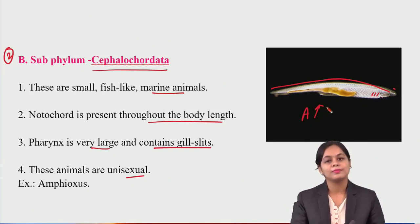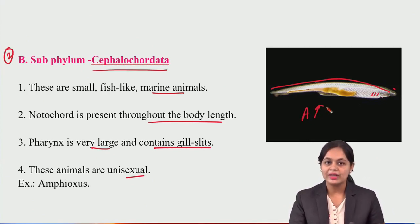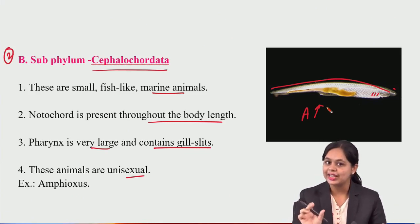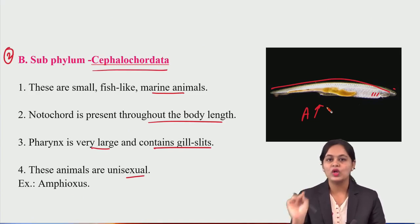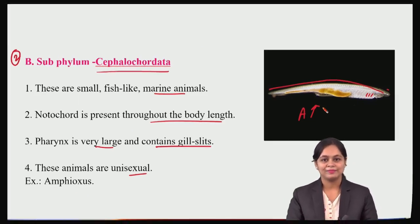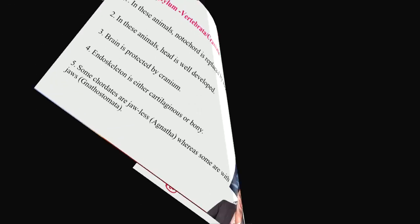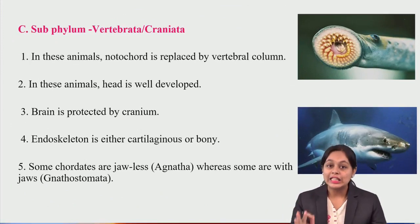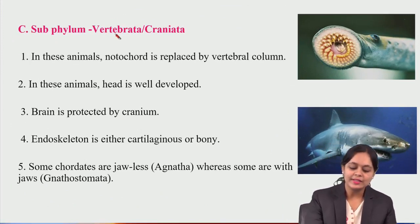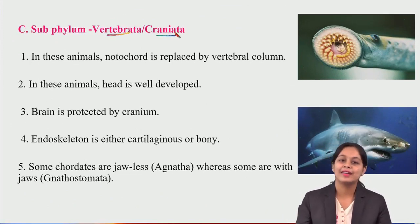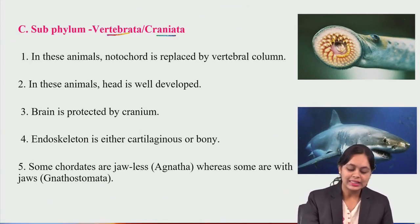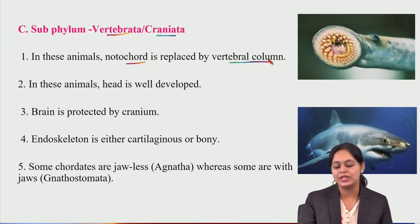The example of Cephalochordata is Amphioxus — fish-like but not fish, smaller in size than fish. Now the third subphylum is Vertebrata, also called Craniata. In these animals, the notochord is replaced by the vertebral column.